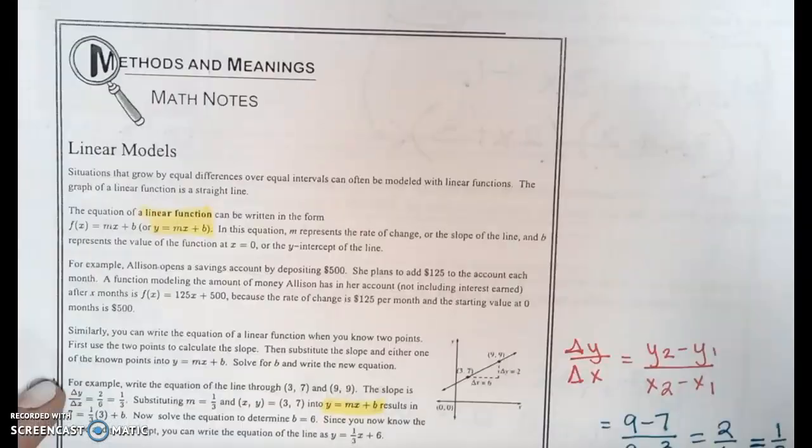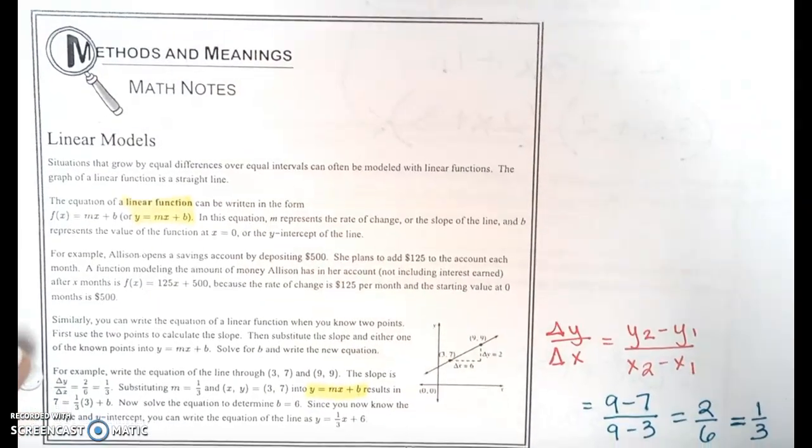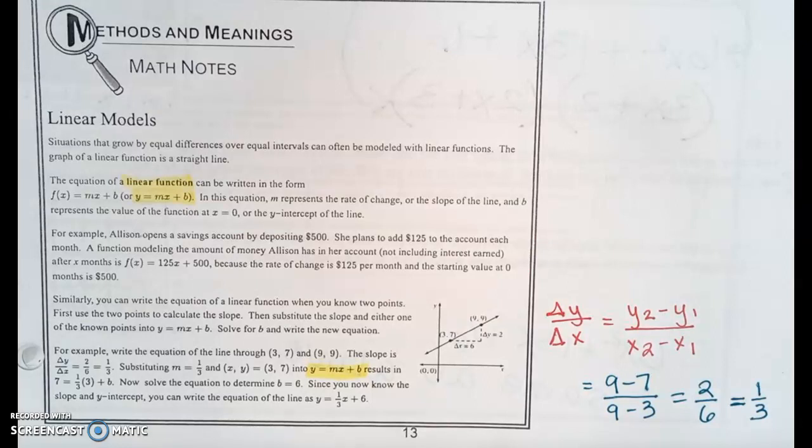Go ahead and flip over to page 13 down at the bottom to the math notes box. It says linear models. Situations that grow by equal differences over equal intervals can often be modeled with linear functions. The graph of a linear function is a straight line. The equation of a linear function can be written in the form f(x) = mx + b or you've commonly heard it probably as y = mx + b. In this equation, m represents the rate of change or the slope of the line and b represents the value of the function at x = 0 or its y-intercept.